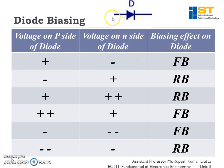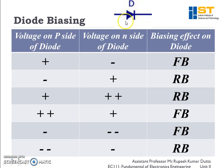When we apply positive voltages on both terminals of the diode, we must remember: for forward bias, the P side should have more positive voltage than the N side, and the N side should have more negative voltage than the P side. Only in these two conditions is the diode in forward bias. In all other conditions, the diode will be in reverse bias.